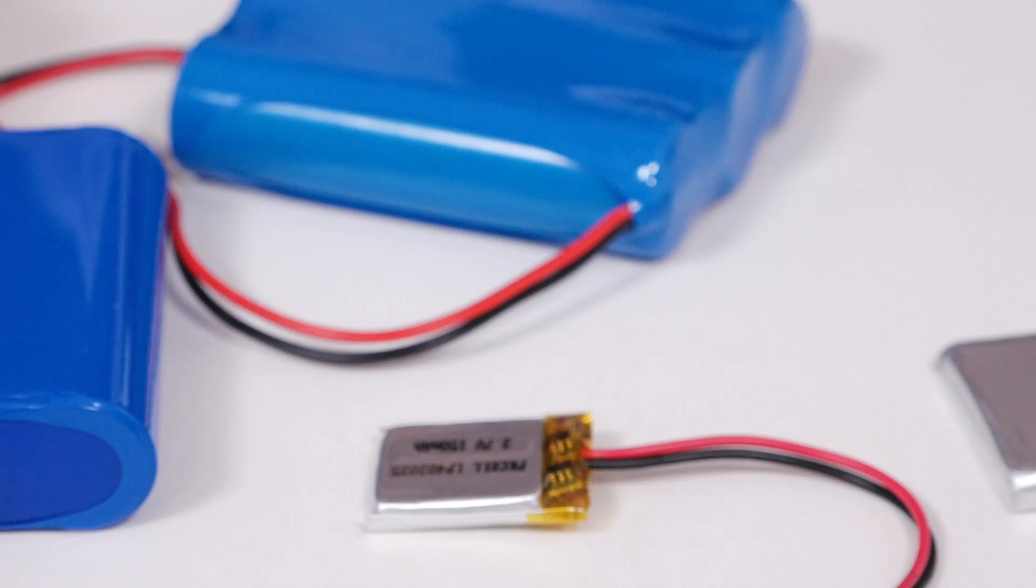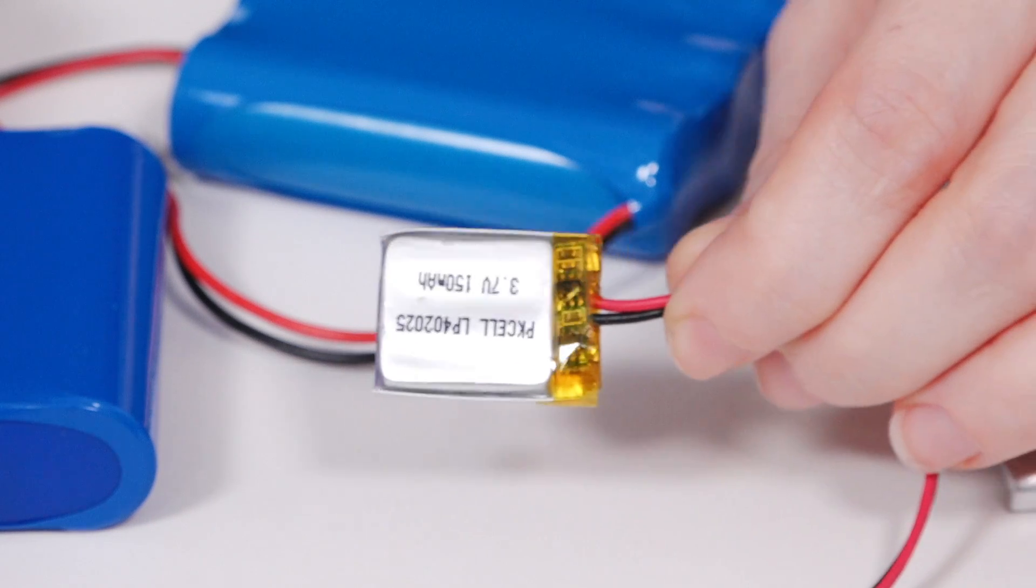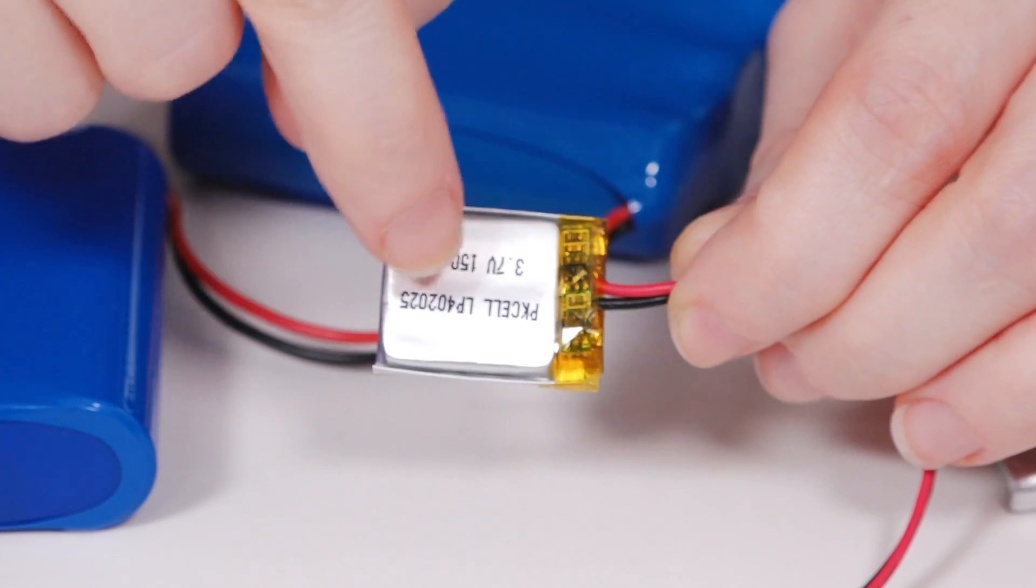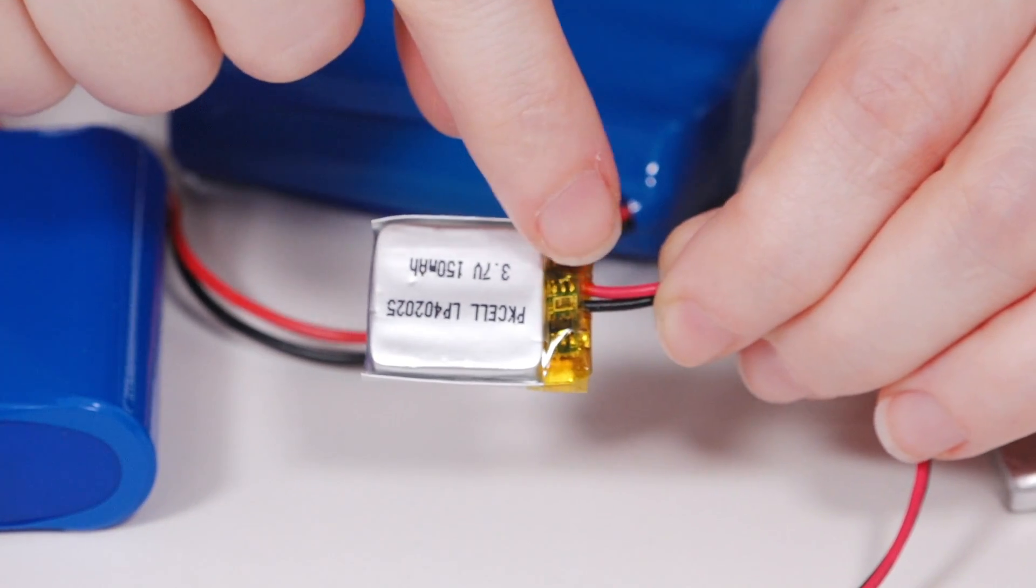Because lithium polymer batteries are so delicate, you have to make sure not to over-volt them, under-volt them, or draw too much current. Make sure that each of your polymer cells has a protection circuit. You can see the circuit here. It's under the yellow translucent tape.